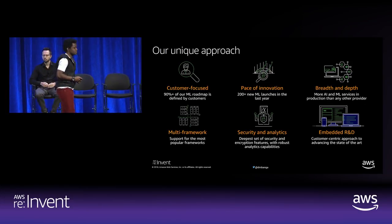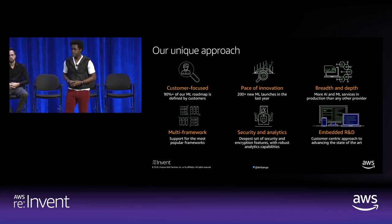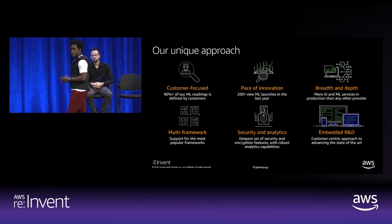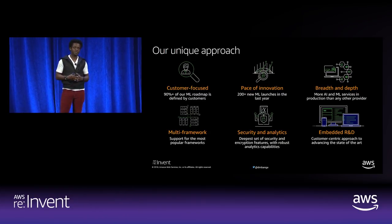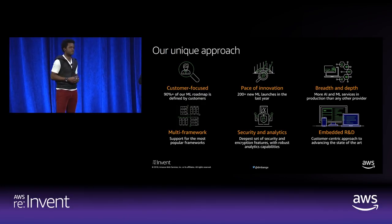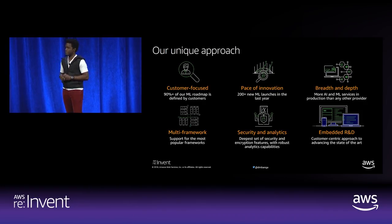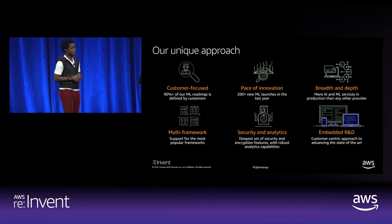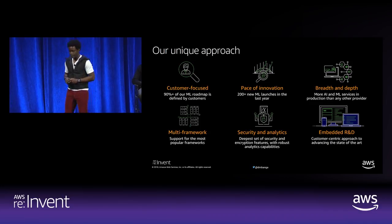Our approach at AWS to enable all of these capabilities is to start by being customer-focused — 90 to 95% of our roadmap is driven by customer feedback. We're aggressive at the pace at which we innovate. We focus on both breadth and depth simultaneously; there are more AI and machine learning services in production at AWS than anywhere else. Because we're aggressively listening to customers, we support every popular framework that exists — PyTorch, TensorFlow, MXNet, Caffe — all packaged within a secured environment, with research and development embedded into everything we do.